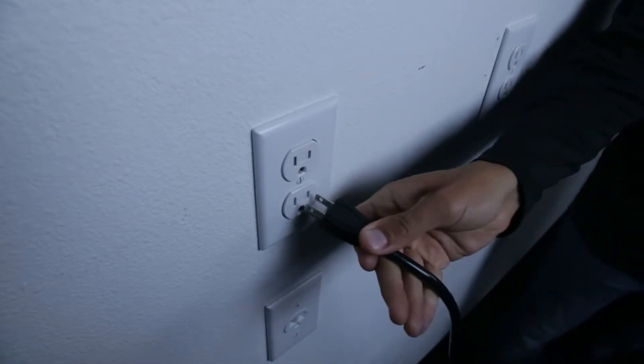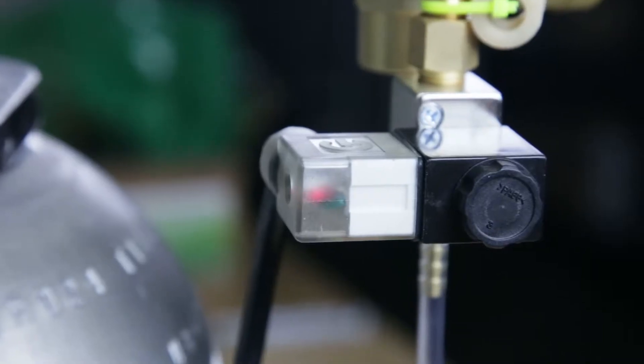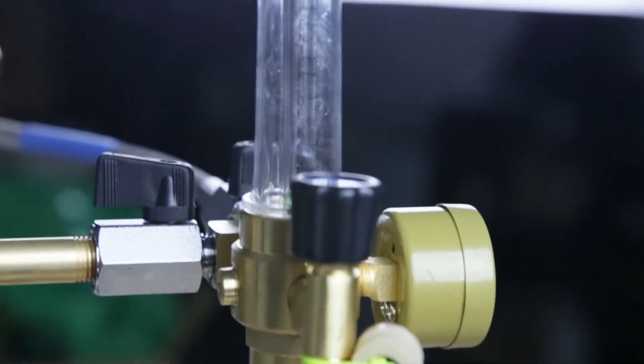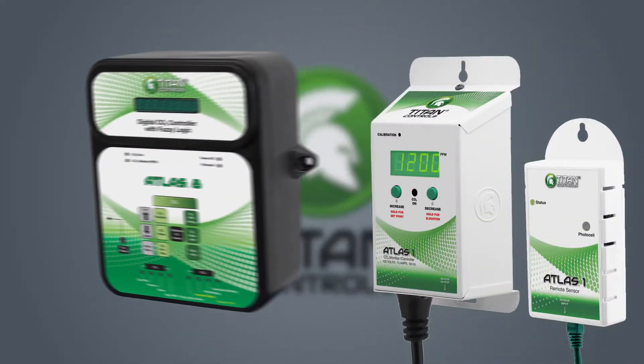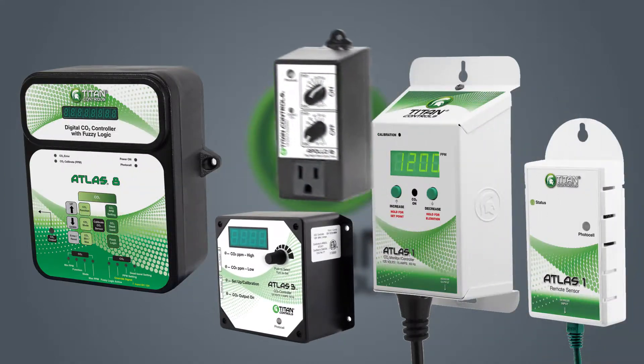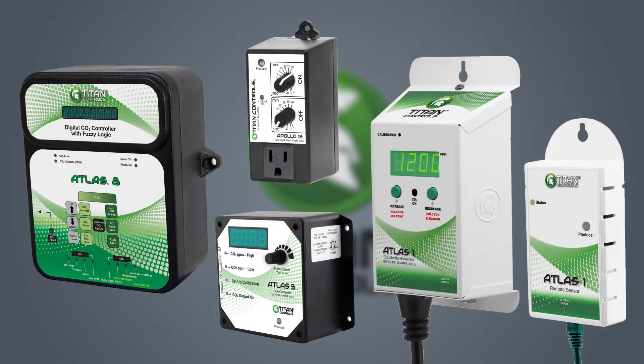Plug the CO2 regulator into a 120-volt source. The timing of CO2 release can be done manually, but it is recommended that you use a CO2 controller, recycle timer, or 24-hour appliance timer to dispense CO2 at a standardized rate.